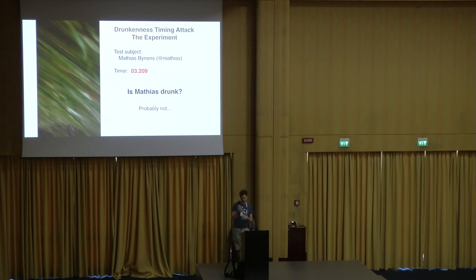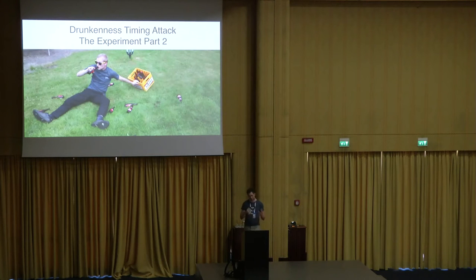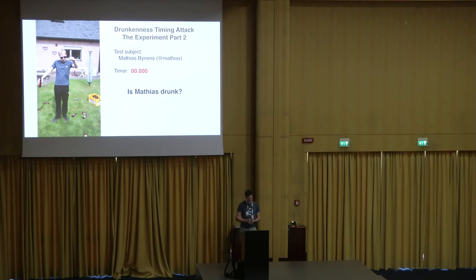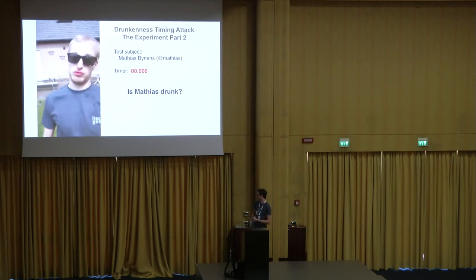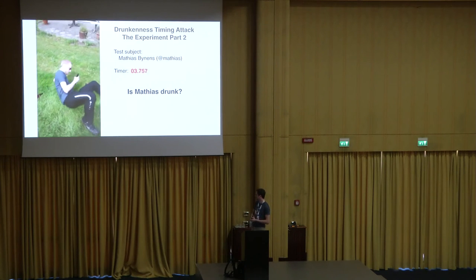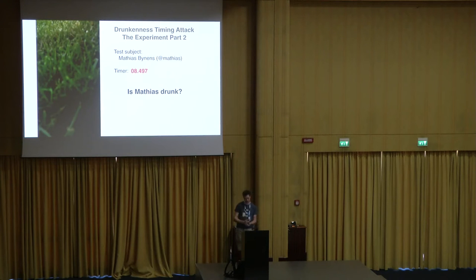To answer whether my test subject Matthias is drunk — probably not. But at that point we have just a single measurement with nothing to compare it to. So I extended the experiment. For the second part, I wanted a predictable value, so I gave some beer to Matthias and made sure he was drunk. I performed the same attack again — I went up and slapped him in the face. As you can already see, he has a lot of trouble getting up, but in the end he slaps me back. Now it takes more than eight seconds. Because this value is higher, we can infer that Matthias is actually drunk. The timing attack worked.